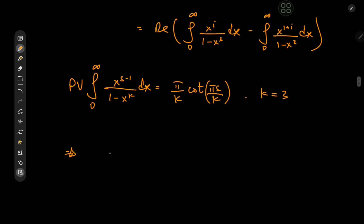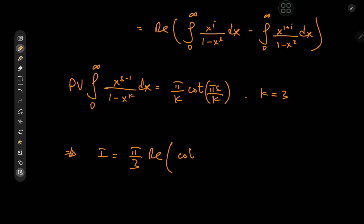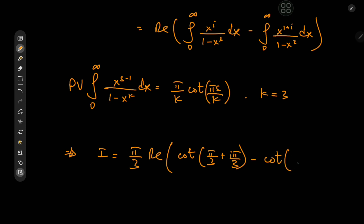This implies that the target integral I equals the real part. We can factor out pi/3, so we need pi/3 times the real part of the cotangent. For the first term, s equals i plus 1, so the argument is pi/3 plus i·pi/3. For the second term, s equals i plus 2, giving argument 2·pi/3 plus i·pi/3. So we have pi/3 times the real part of cotangent(pi/3 + i·pi/3) minus cotangent(2·pi/3 + i·pi/3).